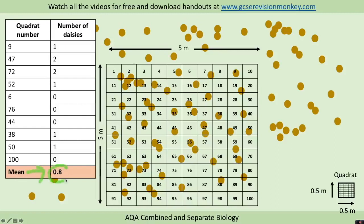And we're going to then calculate a mean number of daisies per quadrat. And because we're going to use this number again in a minute in a calculation, I'm just going to leave it as a decimal rather than rounding it as I would do normally with a mean. So we've got a mean number of daisies per quadrat.